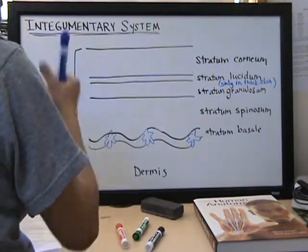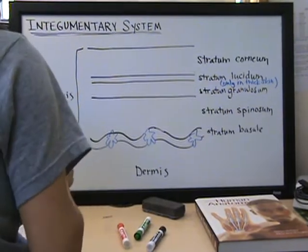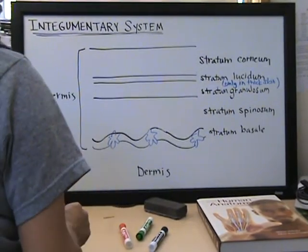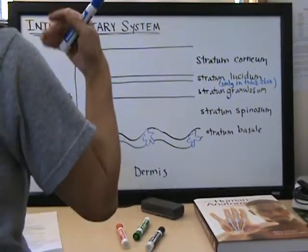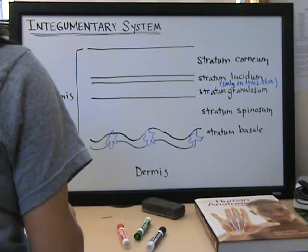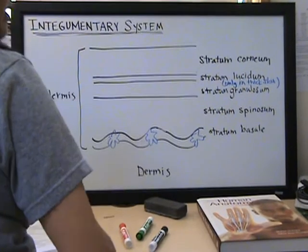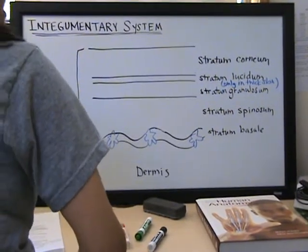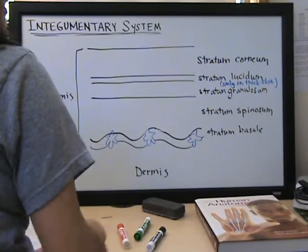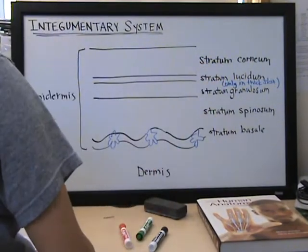And it's only in thick skin. So this layer is missing in thin skin areas that have very thin layers like the eyelids and other places in the body. Thick skin is found on the soles of the feet and palms of the hand. And so that will have that extra lucidum layer.